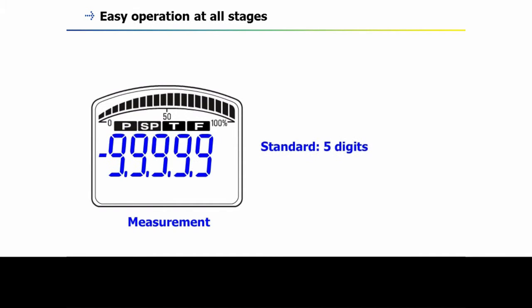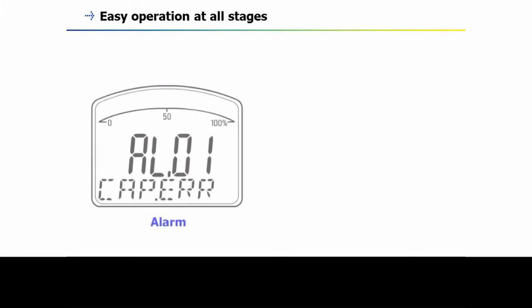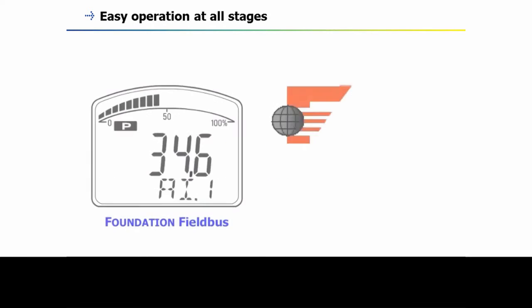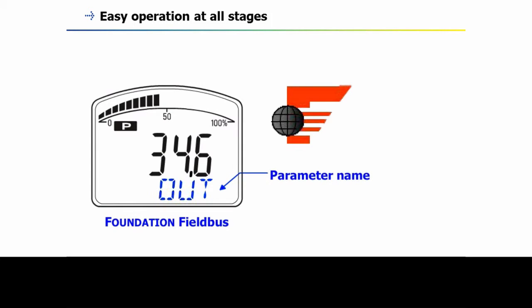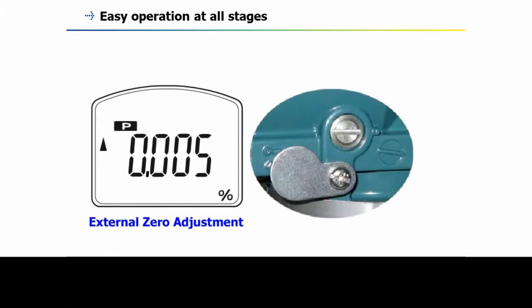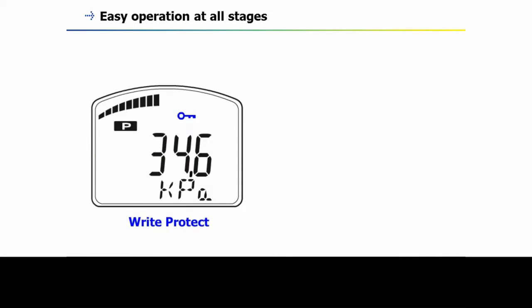Five-digit number display is standard, and six digits for multi-variable. Additional display elements include alarm number, alarm message, block tag, parameter name, status, external zero adjustment, and write protect.